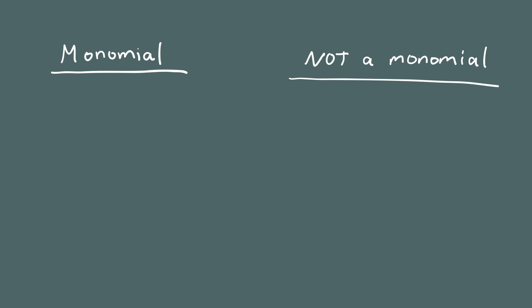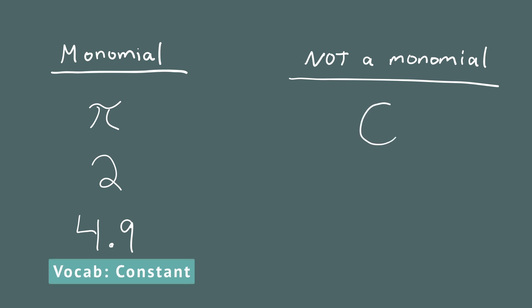Lastly, remember there were two types of monomial. A number times variables to positive integer powers, and the other kind is simply just a number. So for example, pi is a monomial, 2 is a monomial, 4.9 — these are all monomials. We call them constant terms. A smiley face, on the other hand, is just not a number, so it's not a monomial.